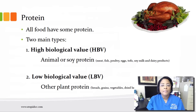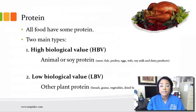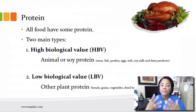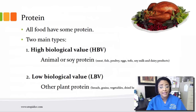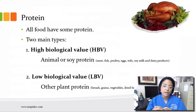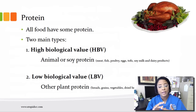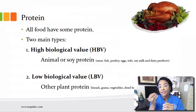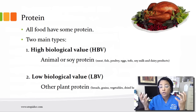All foods have some type of protein. The two main types are high biological value and low biological value. High biological value comes from animal or soy protein — examples are meat, fish, poultry, eggs, tofu, soy milk, and dairy products. Low biological value comes from other plant protein — examples are bread, grains, vegetables, dry beans, peas, and fruits. For dialysis patients, it is suggested that they eat high biological value protein.